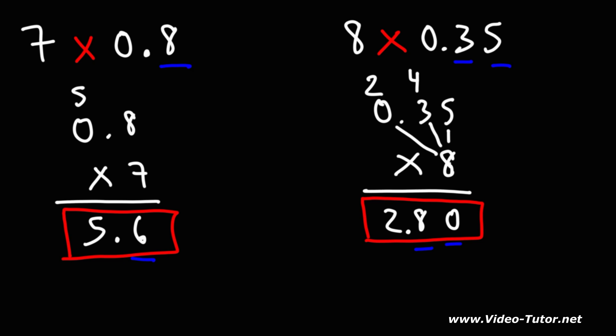So that's how you can multiply a whole number by a decimal and get the right answer.